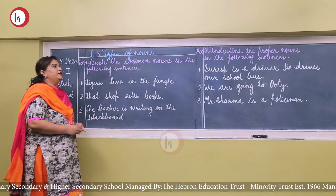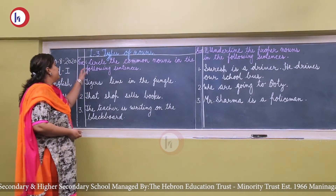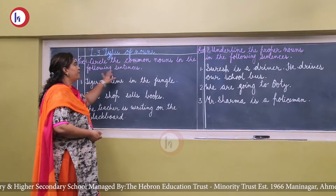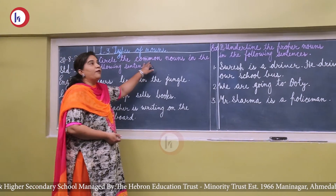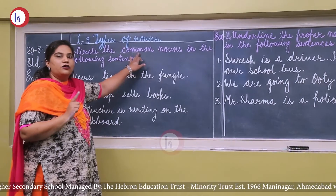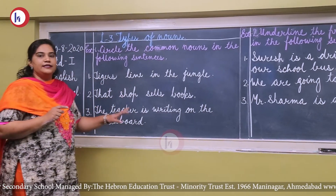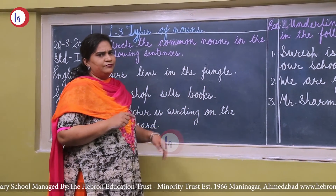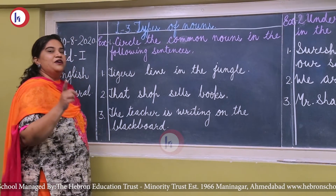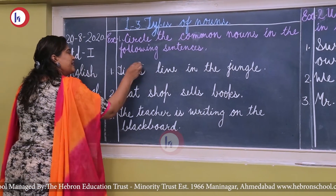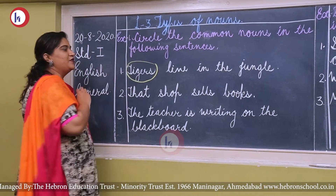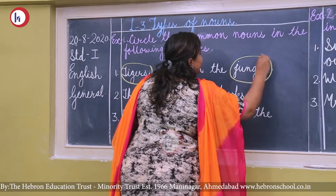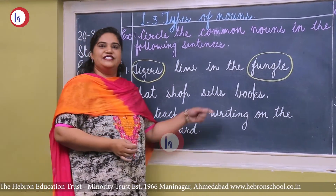Now let's learn exercises about common noun and proper noun. Exercise number one: circle the common noun in the following sentences. General names are called common nouns. Number one — 'Tigers live in the jungle.' There are two common nouns in this sentence: 'tigers' and 'jungle.' Tiger is the name of an animal and jungle is the name of a place. Very good, students.